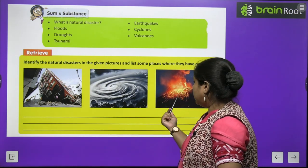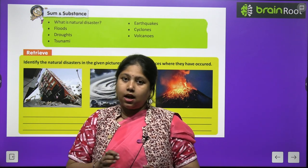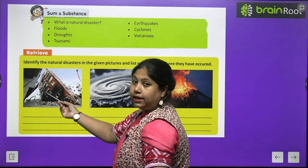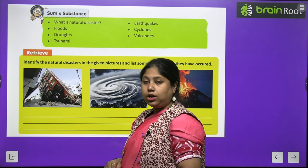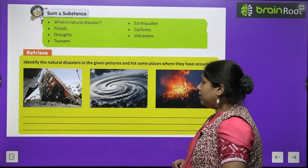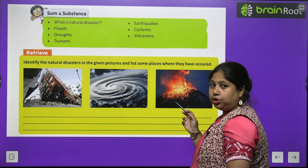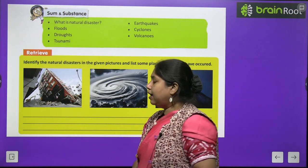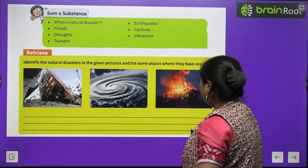Some natural disaster pictures are given here and we have to identify them. The first picture shows a building falling down — this is due to an earthquake, when the earth shakes and buildings collapse. Then you can see a kind of tornado and a tsunami — a windstorm tornado over water. And this is a volcanic eruption, where lava is coming out of the volcano. We have done the identification; now you need to write down the places where these natural disasters have occurred — that is for you to do.